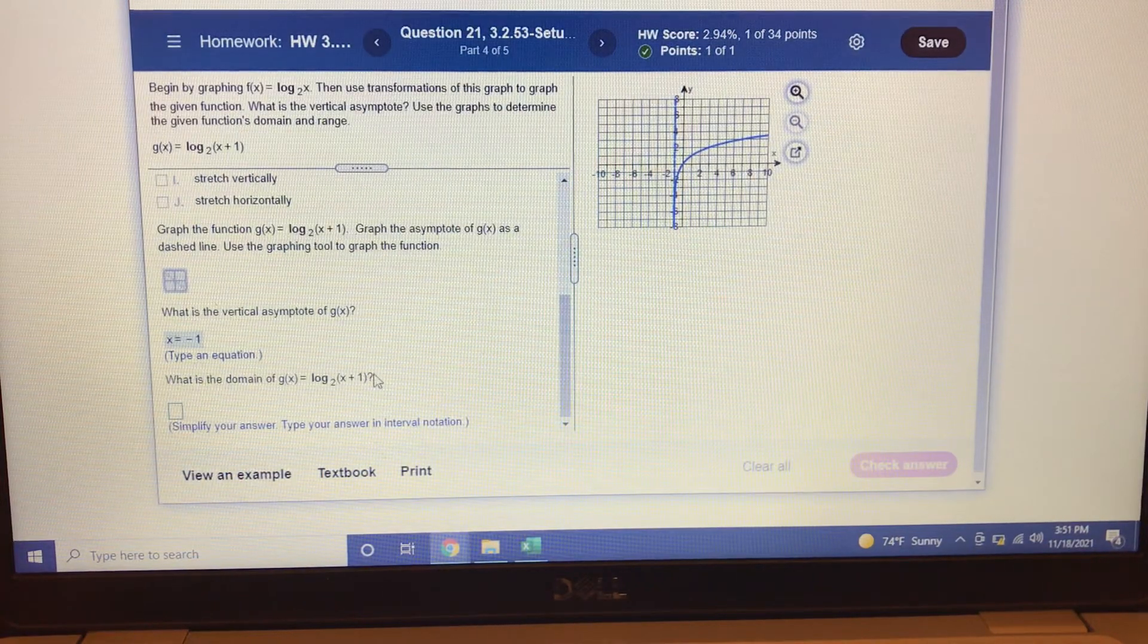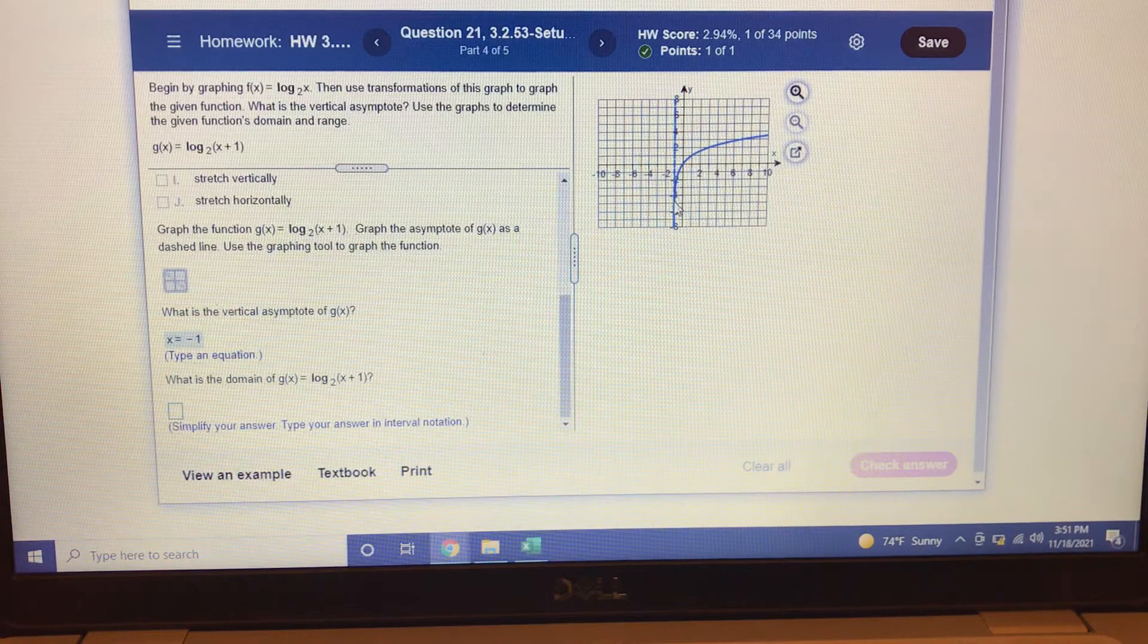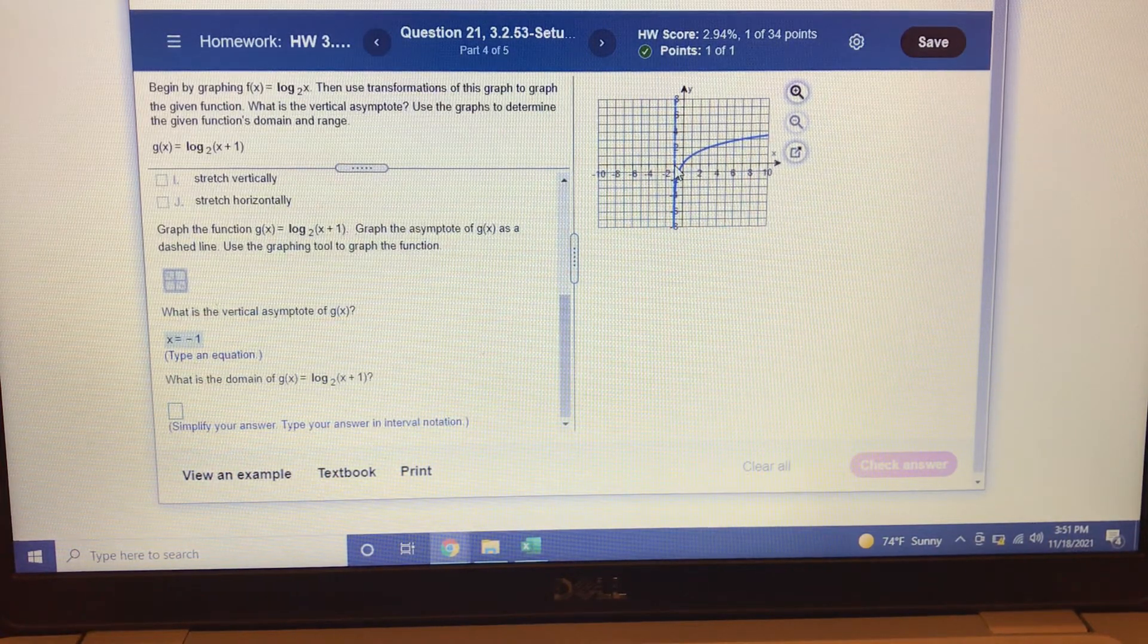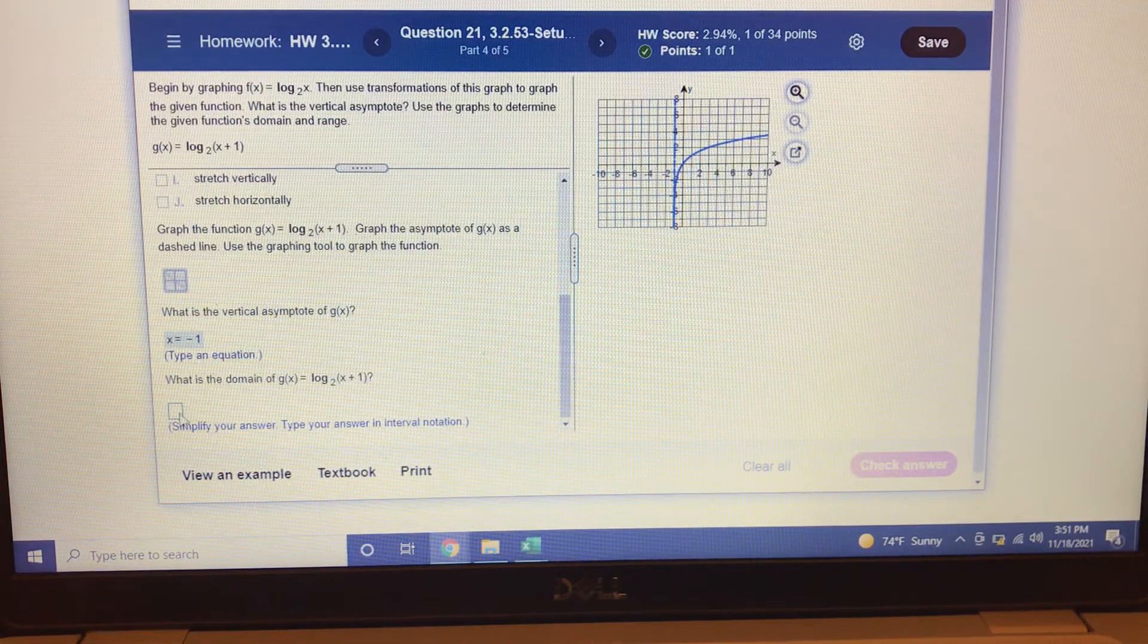What is the domain? Well, looking at the graph, this graph gets closer and closer and closer to negative 1 but never actually touches. And it goes all the way forever. So it's going to go to infinity.